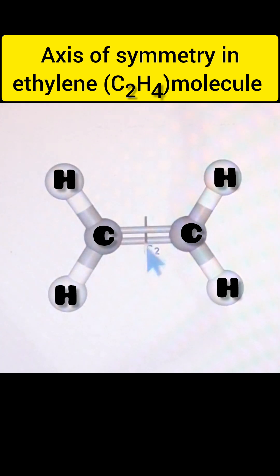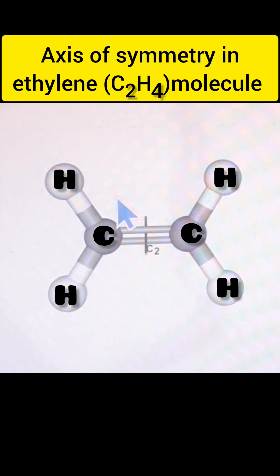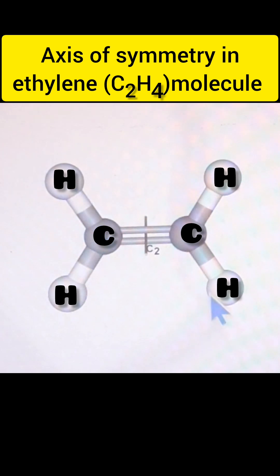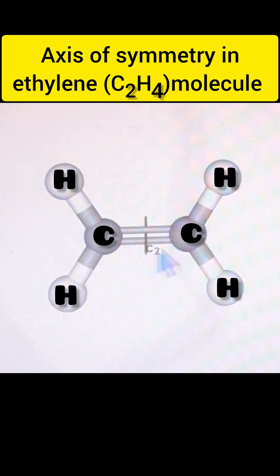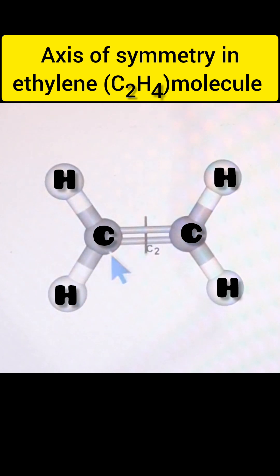Along this axis we rotate the molecule 180 degrees, and after the rotation this hydrogen atom will move to this position, this hydrogen atom will move to this position, and these two hydrogens will also change their positions diagonally.